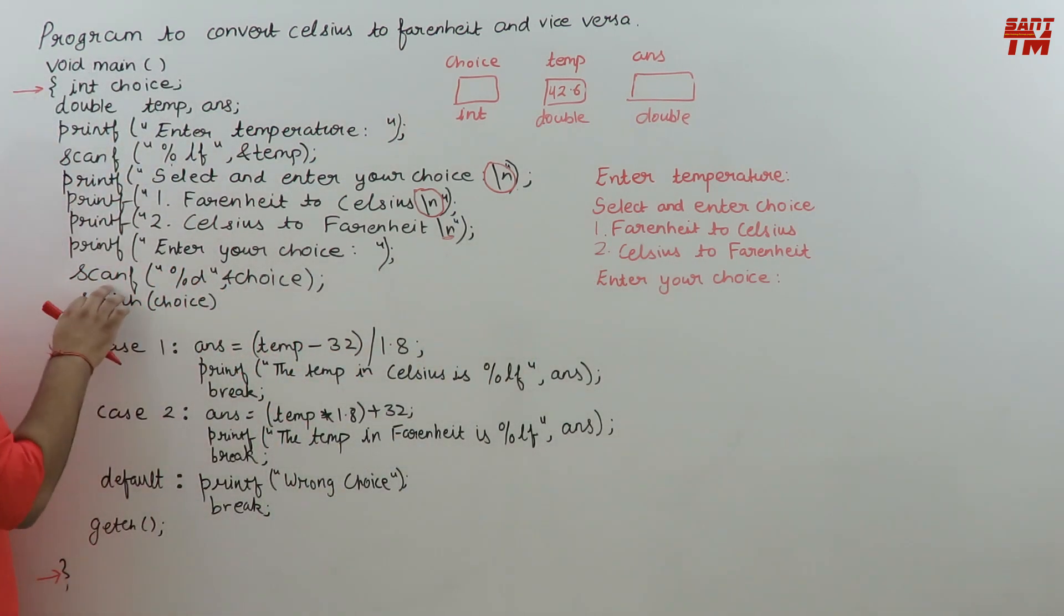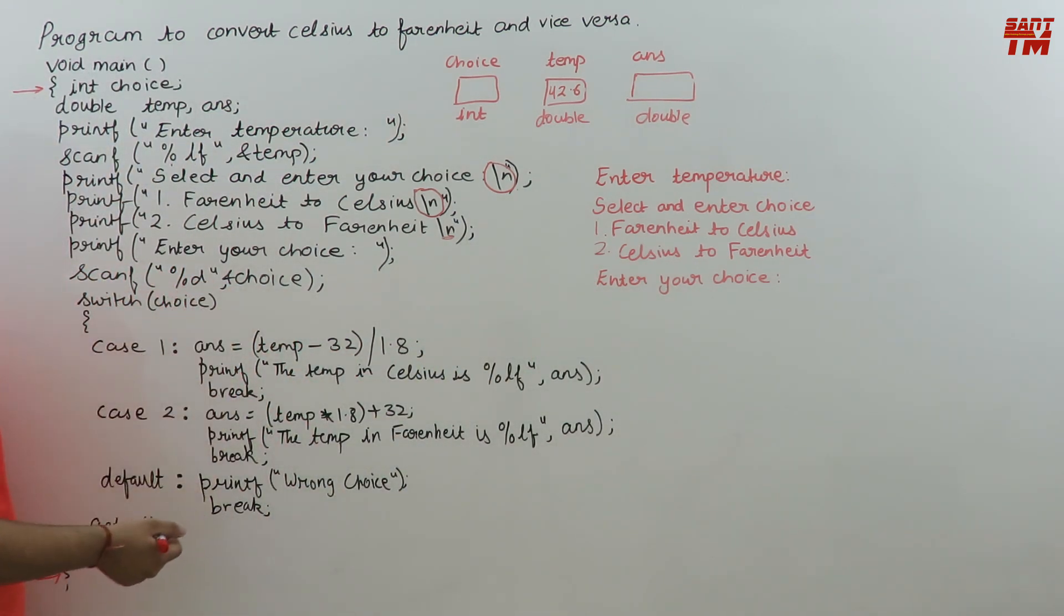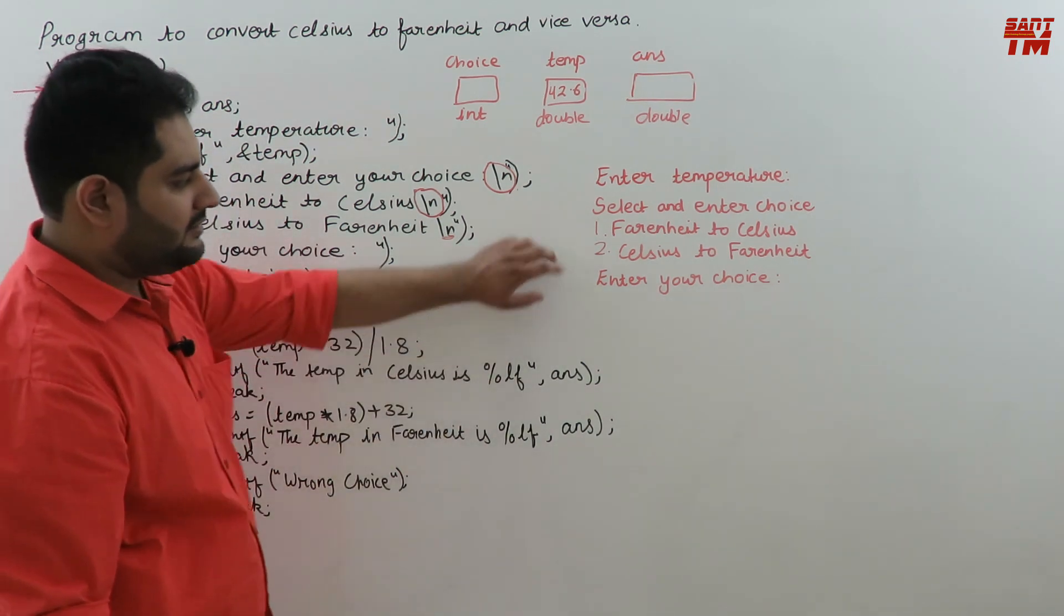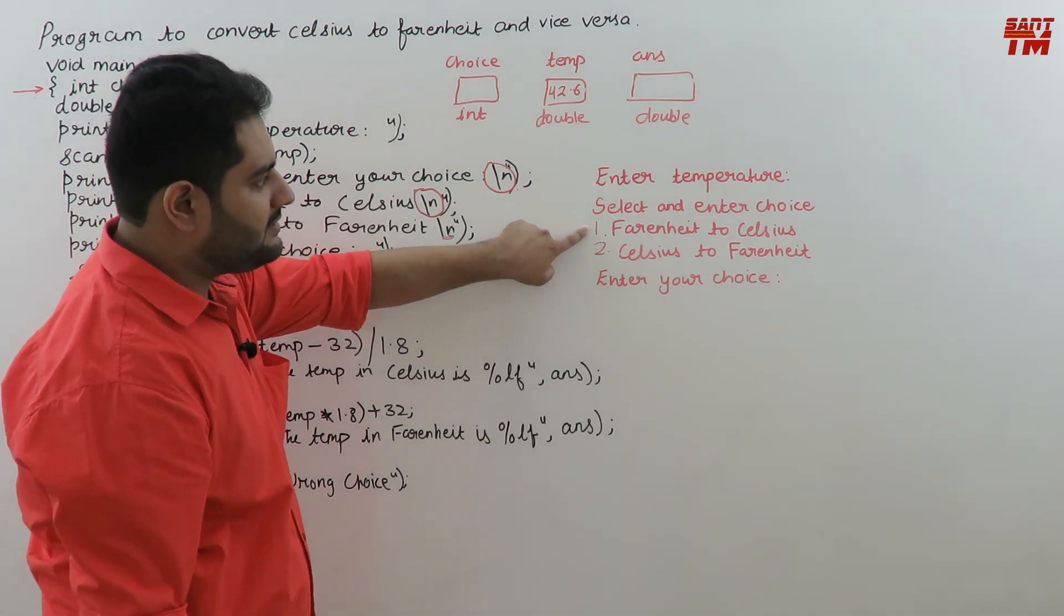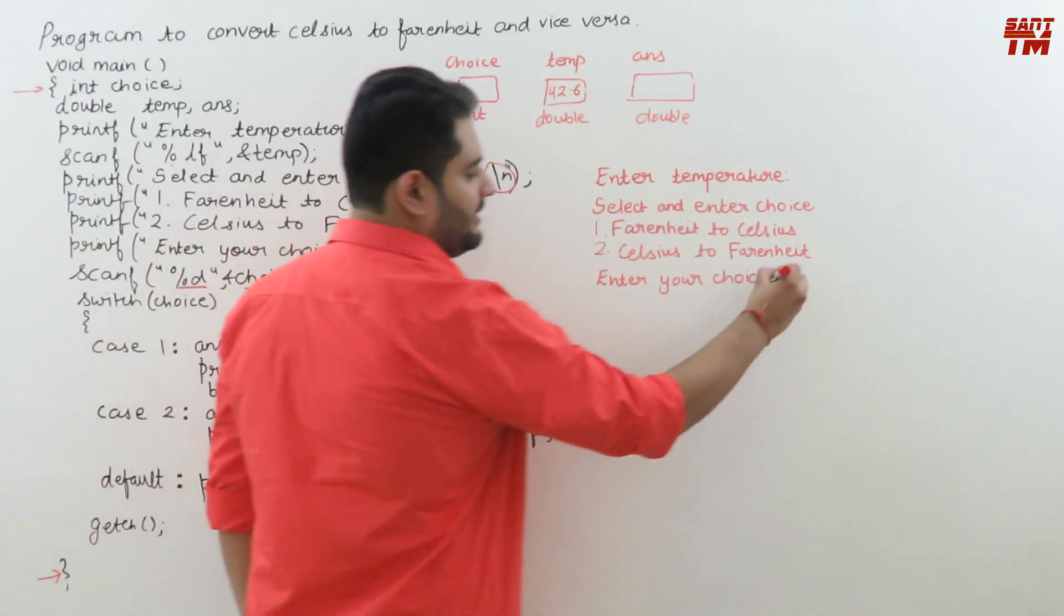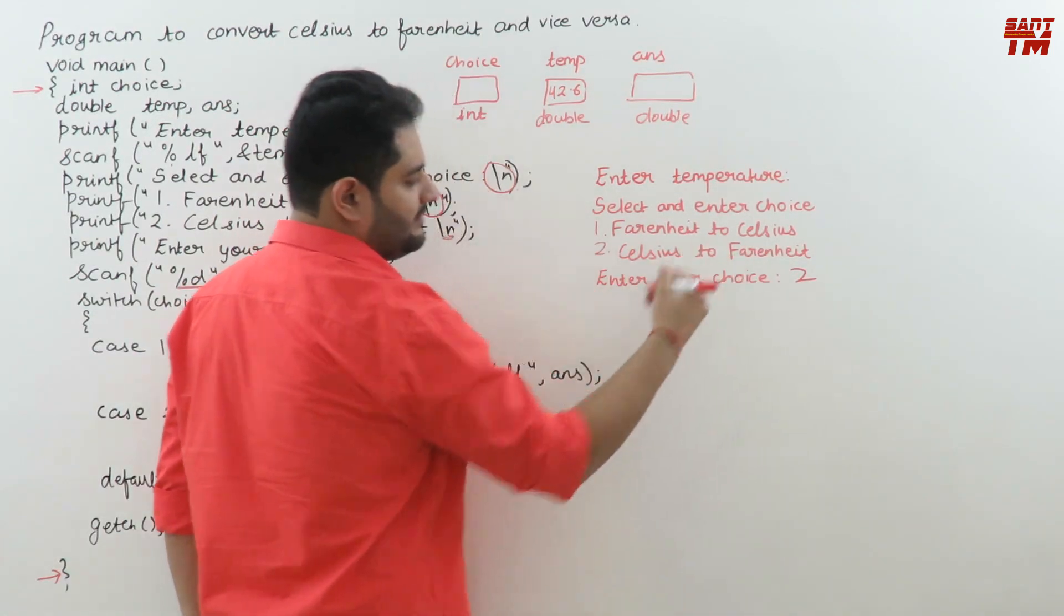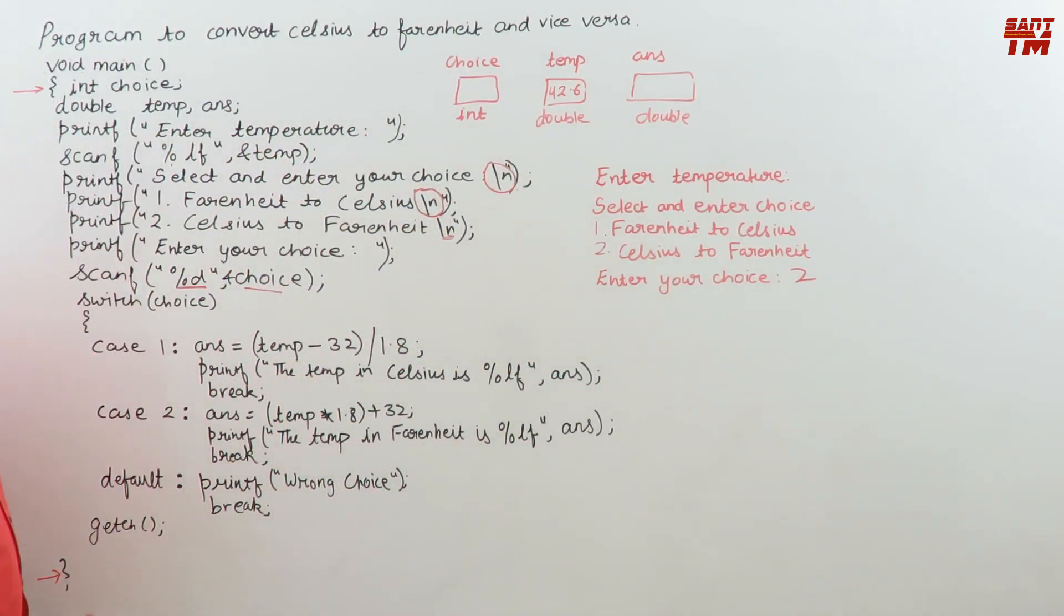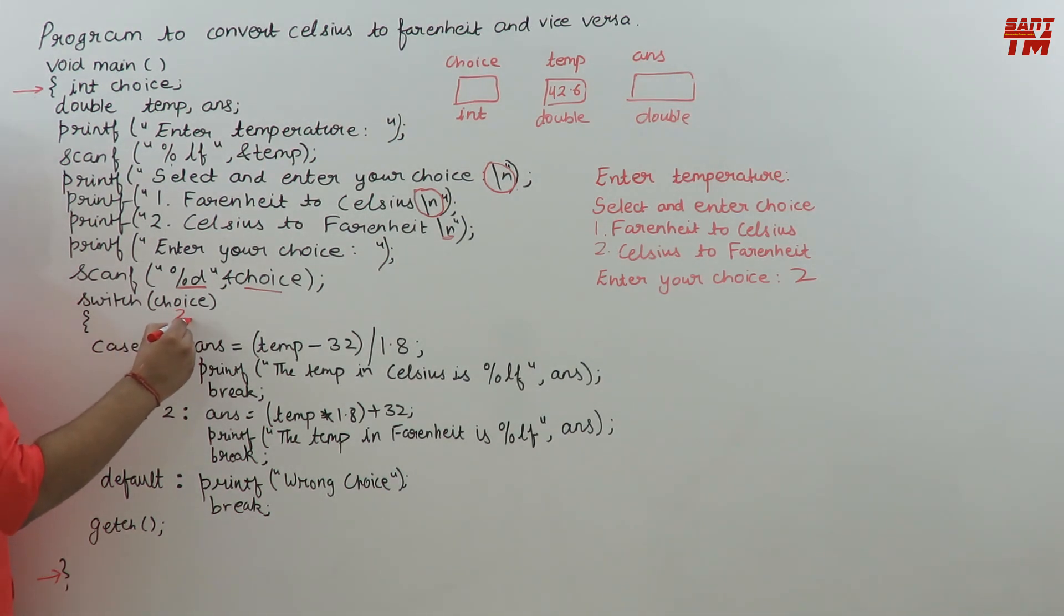Now scanf %d, &choice - we use %d because choice is integer type. You enter your choice whether you want to convert Fahrenheit to Celsius or Celsius to Fahrenheit. Suppose I enter choice as 2, I want to convert Celsius to Fahrenheit. Then this choice variable will have 2, and switch case is applied on this choice.